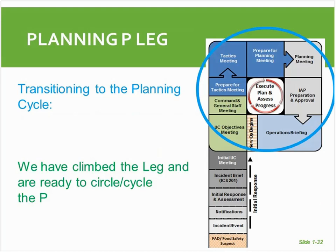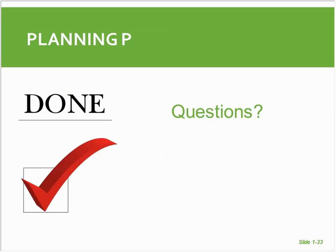One thing that happens when you transition out of initial response and into the planning cycle — the top part of the P — is that the meetings start becoming cyclical. You climb that leg of the P once during the incident, and then starting with the unified command objectives meeting, the process becomes cyclical. For this particular module, we're done, and I'd like to take questions now.